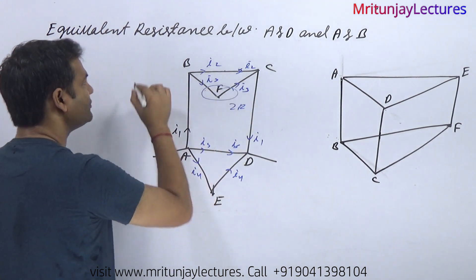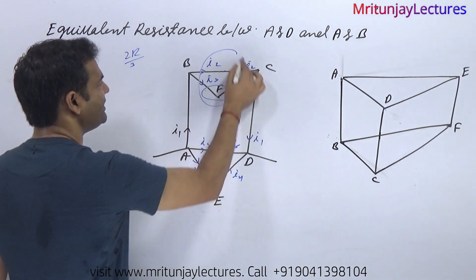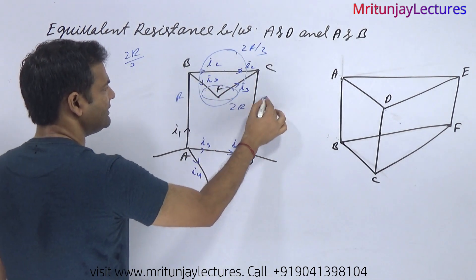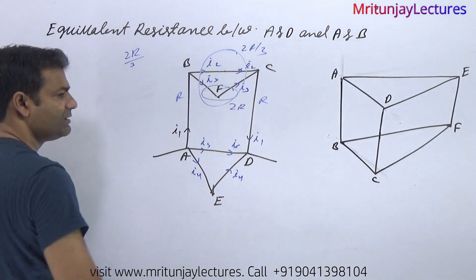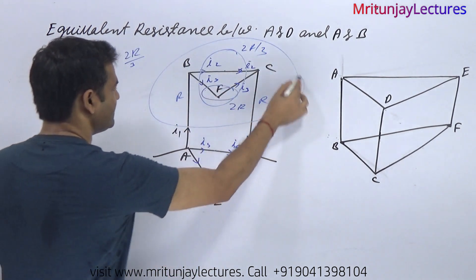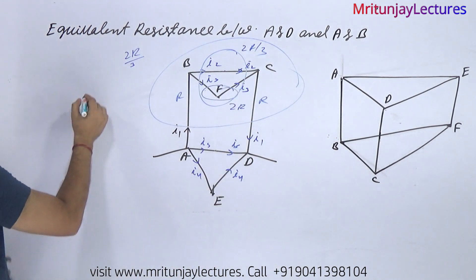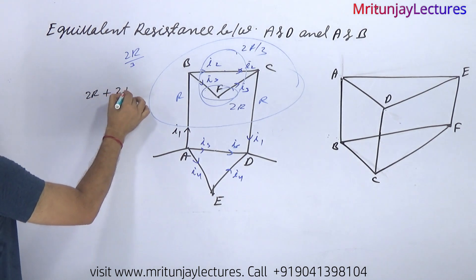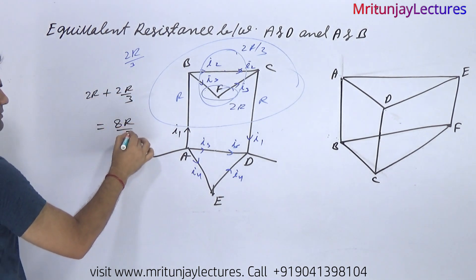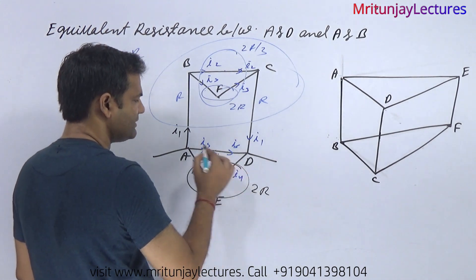After removing that branch: R, 2R, and R. So 2R in parallel with R gives 2R×R divided by 3R, which is 2R/3. That combined with R gives 2R/3 plus R. The whole combination gives us 2R plus 2R plus 2R/3, which equals 8R/3.